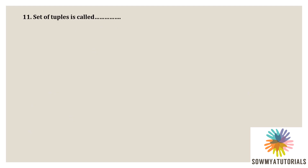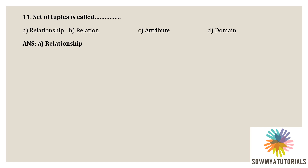Next question: set of tuples is called what? Options are A) relationship, B) relation, C) attribute, D) domain. The correct answer is A — relationship. Relationships are the set of tuples; a table or row in a relational database is a tuple in a relation.